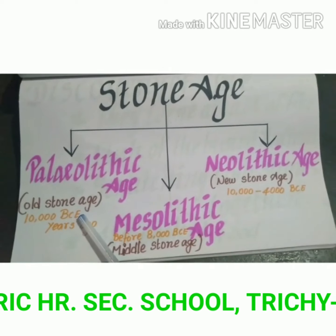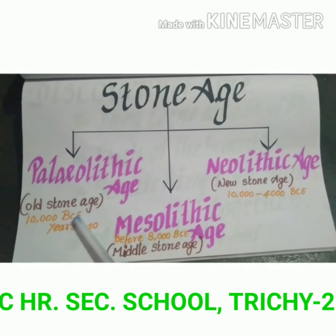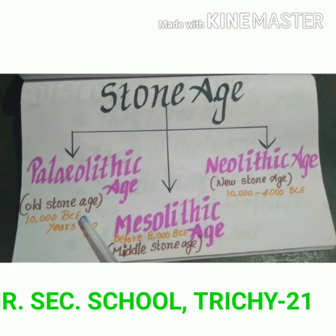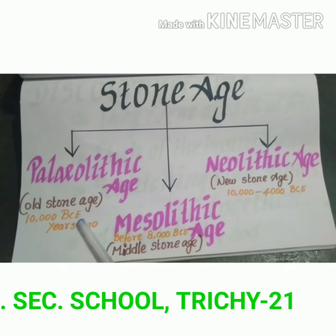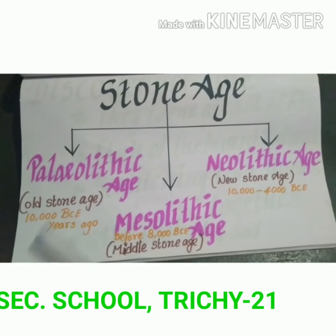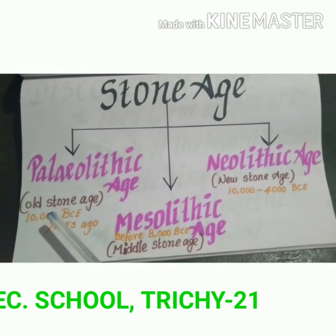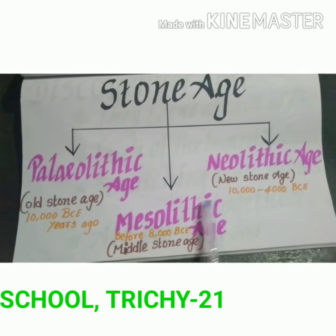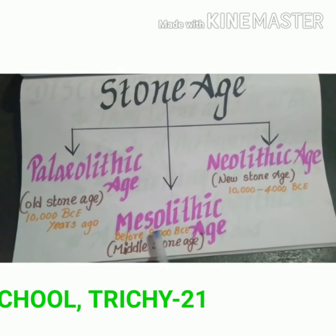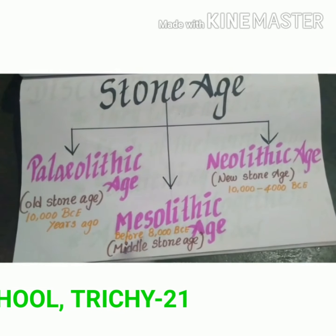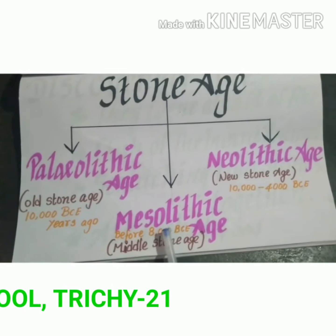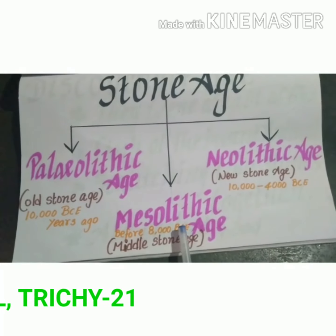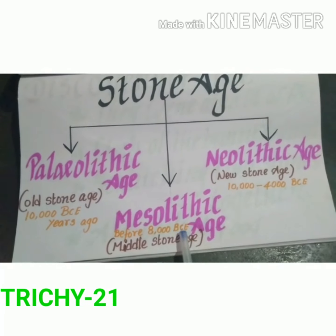B.C. means Before Christ or Before Common Era. The Paleolithic, or Old Stone Age, dates to 10,000 years ago. The Mesolithic Age dates to before 8,000 B.C.E., that means 8,000 years before Christ, before common era.